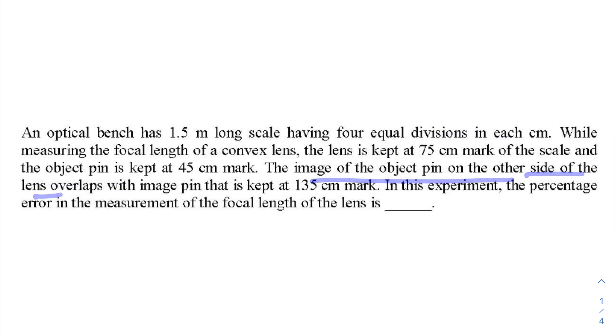The image of the object pin on the other side of the lens overlaps with the image pin that is kept at 135 centimeter mark. Indirectly they are saying that the image is formed at 135 centimeter mark. In this experiment, the percentage error in the measurement of the focal length of the lens. Pretty easy, so let's go to our solution.